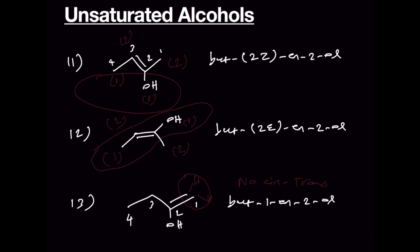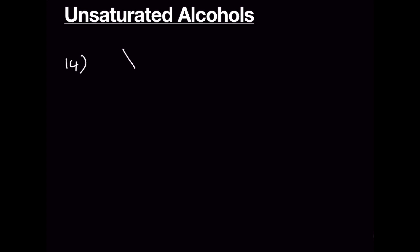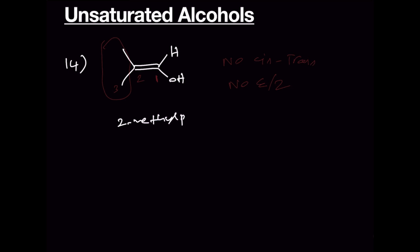That is all about the four-carbon chain alcohols. Let us go to the three-carbon chain alcohols — number 14. We have methyl groups on the same side of the double bond and therefore no E/Z isomerism. The numbering is 1-2-3, and this is 2-methylprop-1-en-1-ol.